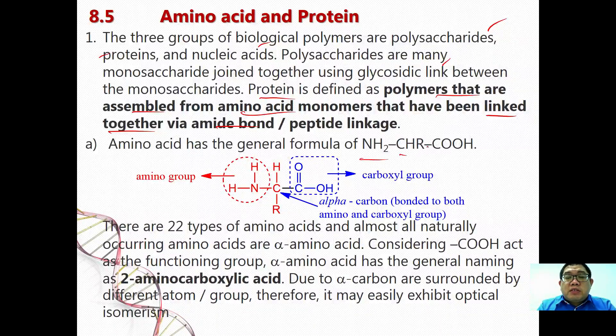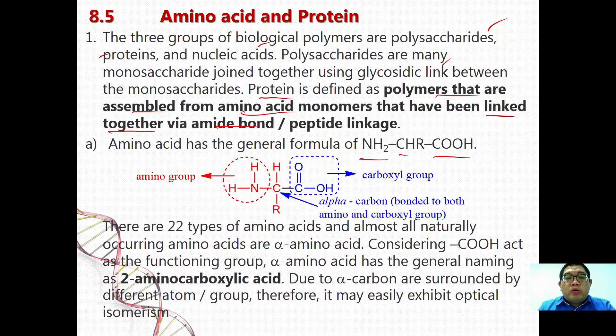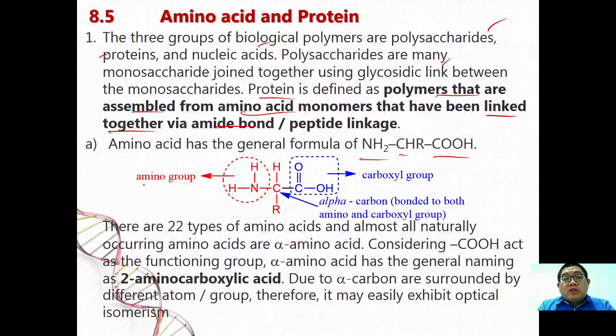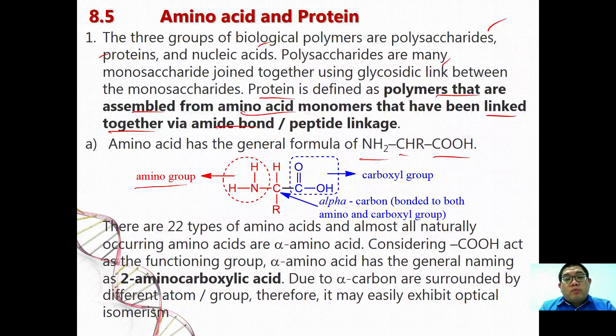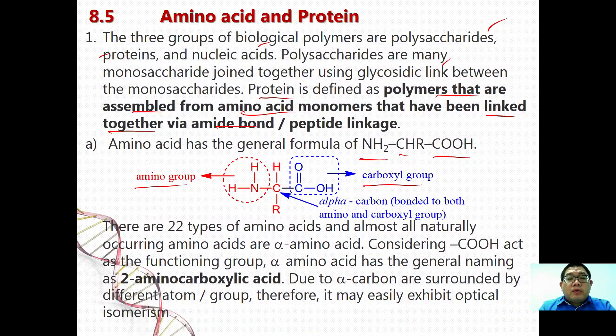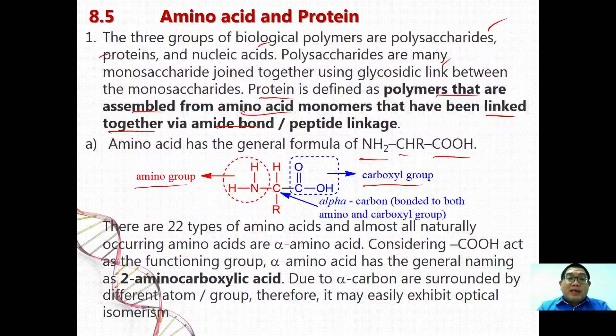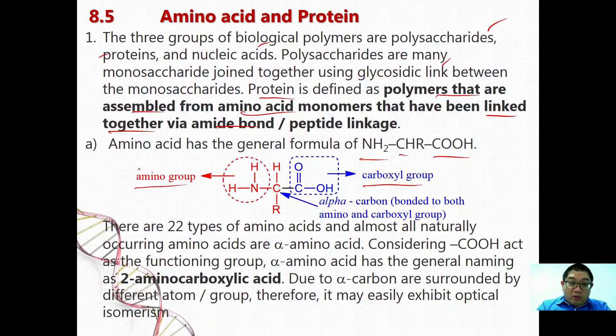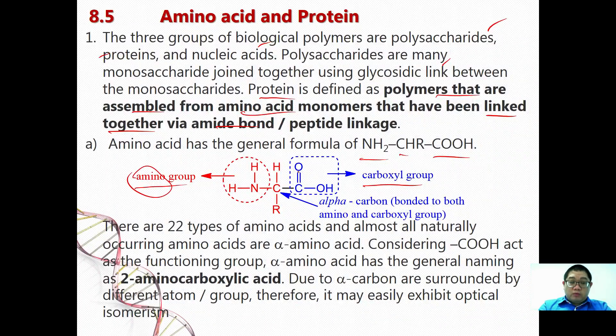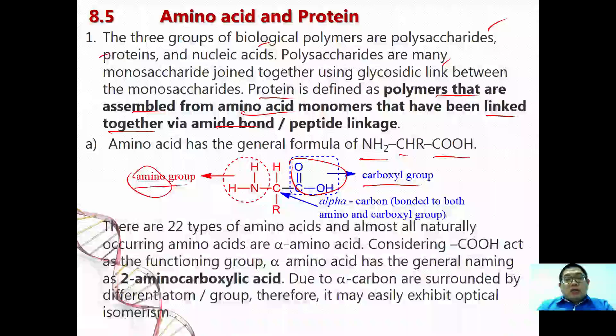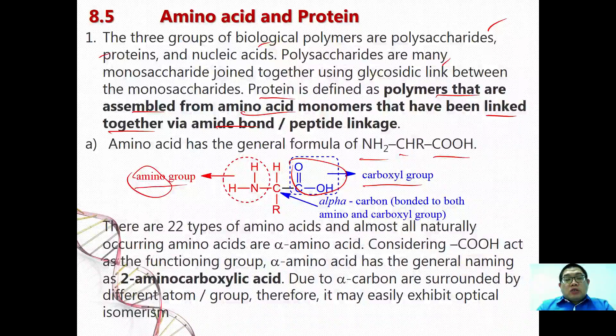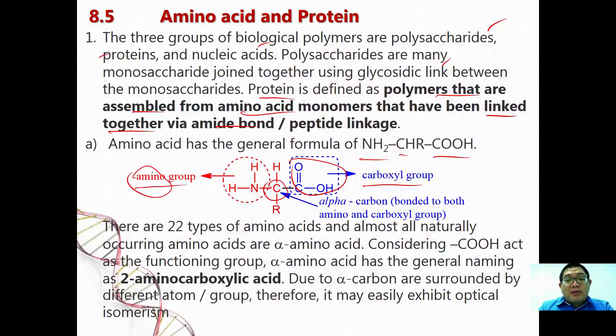Now amino acid has a general formula NH2-CHR-COOH, where you shall have two functional groups. These two functional groups are amino group and also carboxyl group. Because carboxylic acid act as the functioning group inside this amino acid, therefore we have amino and also amino acid. Both of these amino group and carboxyl group are bonded to the same carbon.